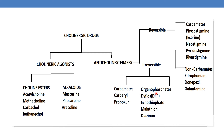One more category of irreversible anti-cholinesterases are organophosphates, which are mainly used as pesticides. Examples are DFP, DFB, echothiophate, malathion, and diazinon.